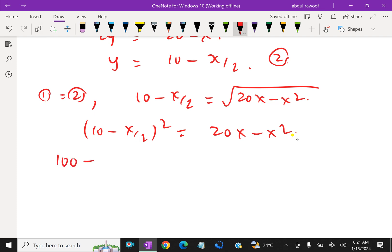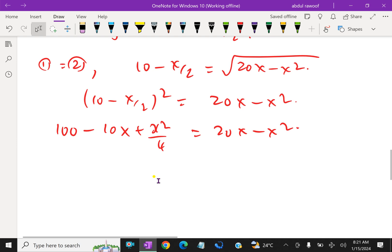10 squared is 100 minus 2 times 10x is 20x plus x squared by 4 equals 20x minus x squared. Now multiply by 4 throughout. 4 times 100 is 400 minus 40x plus x squared equals 80x minus 4x squared.